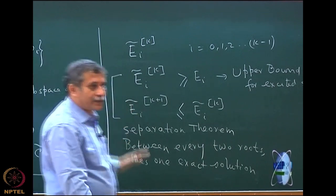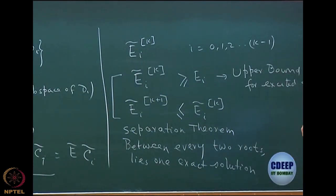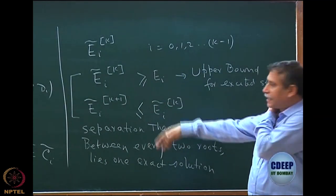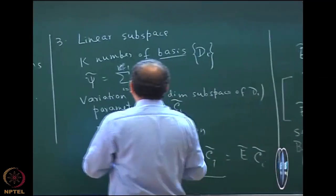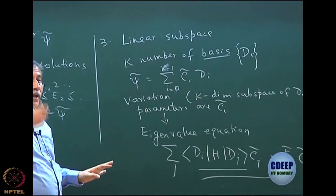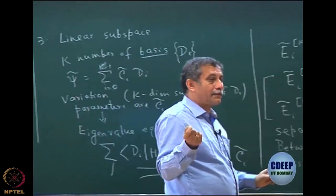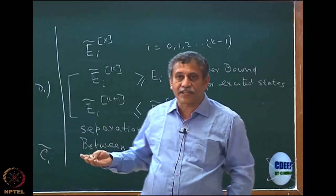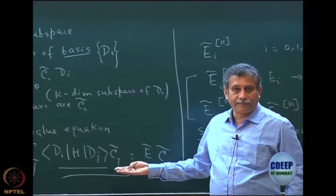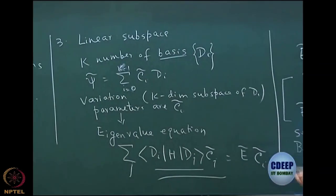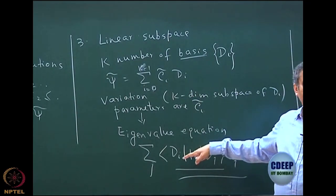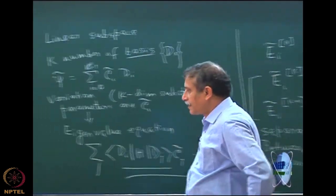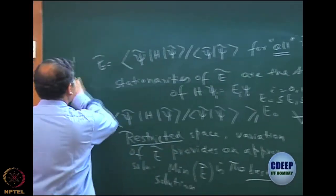This is the content of the separation theorem by McDonald, referenced in Physical Review 1933, which says that between every two roots of the eigenvalue problem lies one exact solution. From this you can derive that eigenvalues remain upper bounds, and as you increase the basis they keep decreasing but never cross the exact eigenvalues. This is a very important subspace.